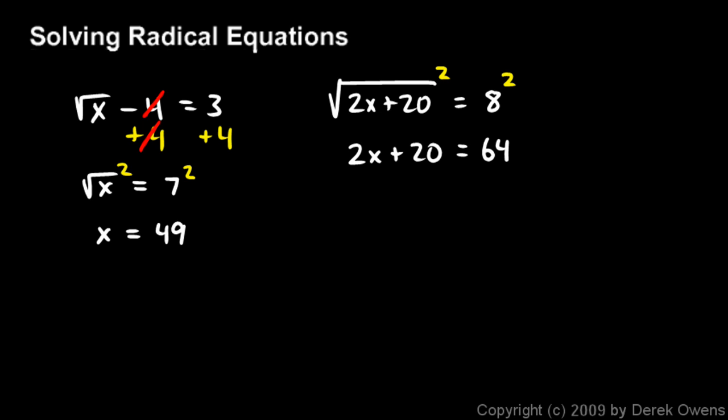And now, we're down to a basic algebra problem where we just solve for the variable. So, the rest here is pretty routine. Subtract 20 from each side, and those cancel, and we're left with 2x equals 44. And then, divide both sides by 2, and you can see pretty quickly that x will be 22.